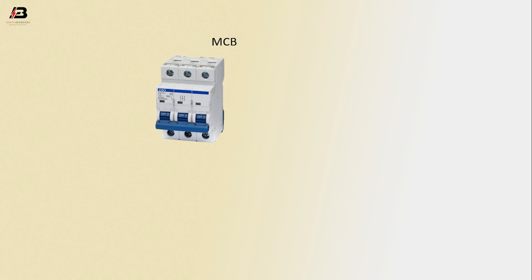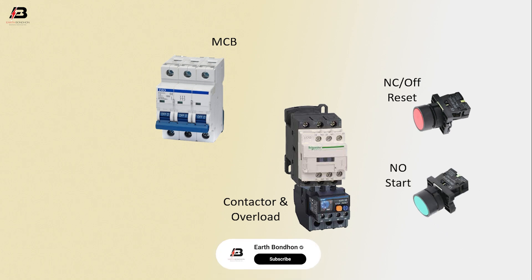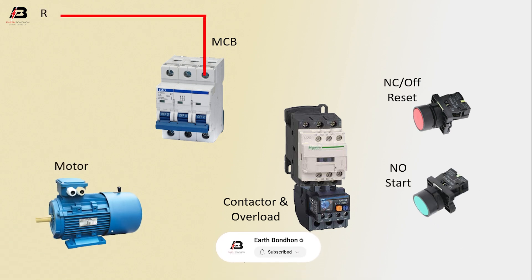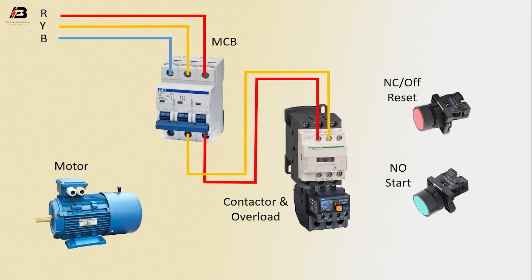So viewers, let's start. TP MCB circuit breaker, contactor, and overload — NC switch, NO switch, motor. First phase connection input to MCB, second phase connection input to MCB, third phase connection input to MCB. Phase connection from MCB to connect contactor, second phase connection from MCB to connect contactor, third phase connection from MCB to connect contactor.